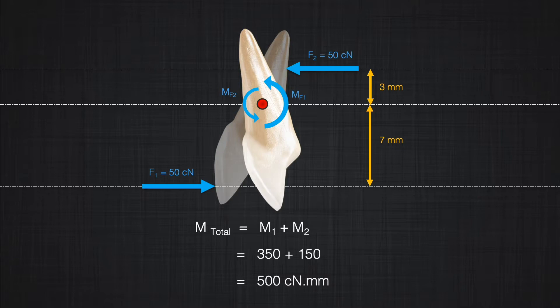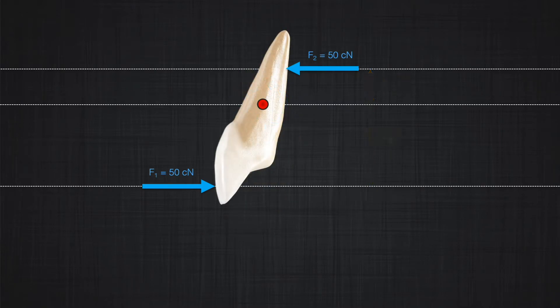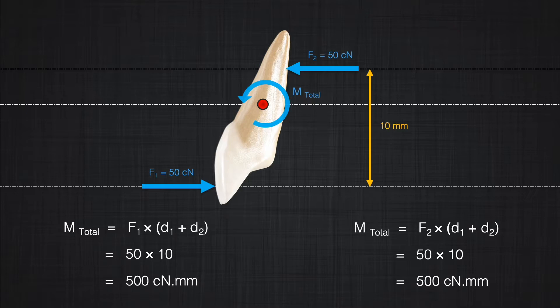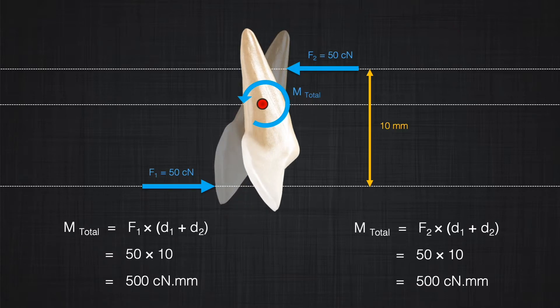Three millimeters and seven millimeters together are 10 millimeters. If we multiply one of the forces — either F1 or F2 — by the distance between the two forces of the couple, which is 10 millimeters, we get 500 centinewton-millimeters in both cases. So the first principle of couples is: the magnitude of the moment produced is equal to the magnitude of one force times the distance between the two forces.